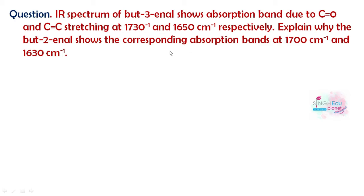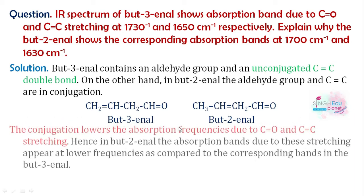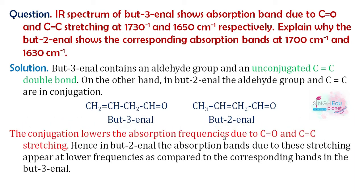Both absorption bands of but-2-enal are at lower frequencies. This is because but-3-enal has an unconjugated C=C bond, while in but-2-enal the aldehyde C=O group is in conjugation with the C=C double bond (double-single-double arrangement). Conjugation lowers the absorption frequencies, which is why but-2-enal shows absorption bands at lower frequencies than but-3-enal.